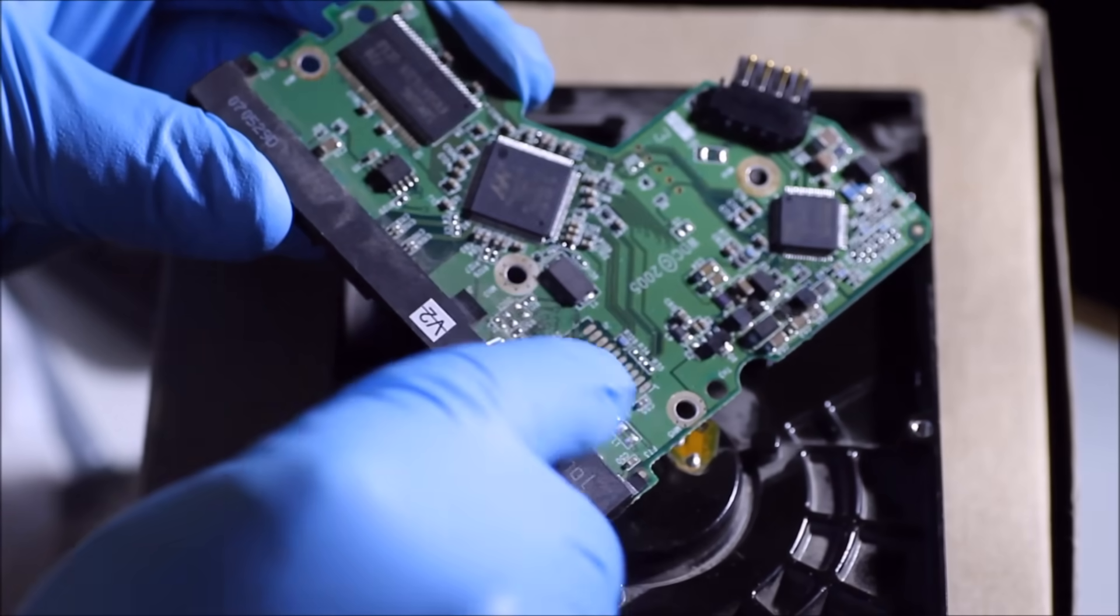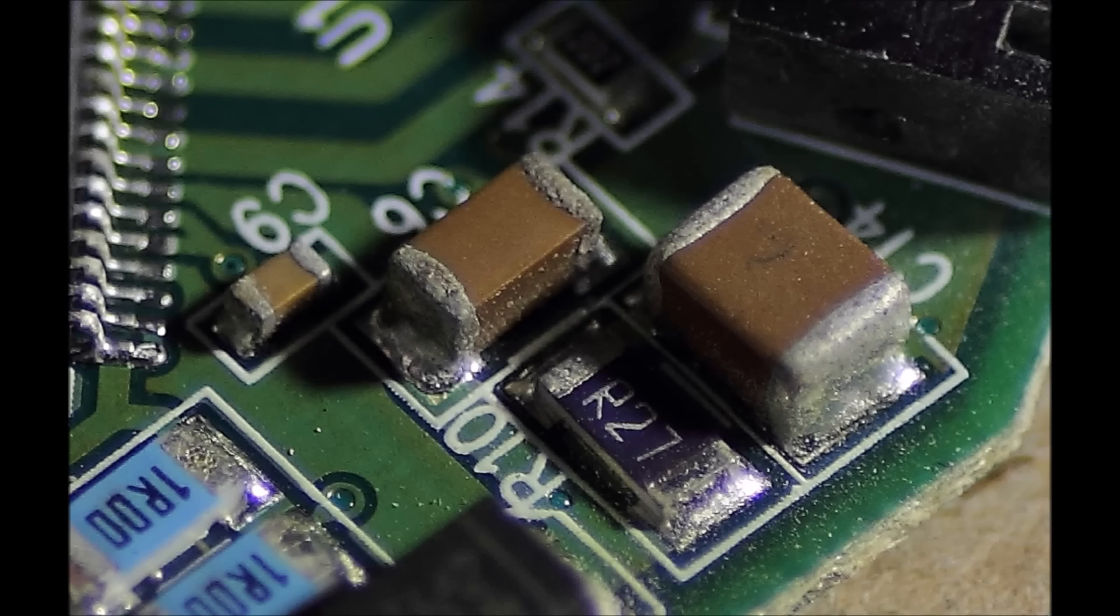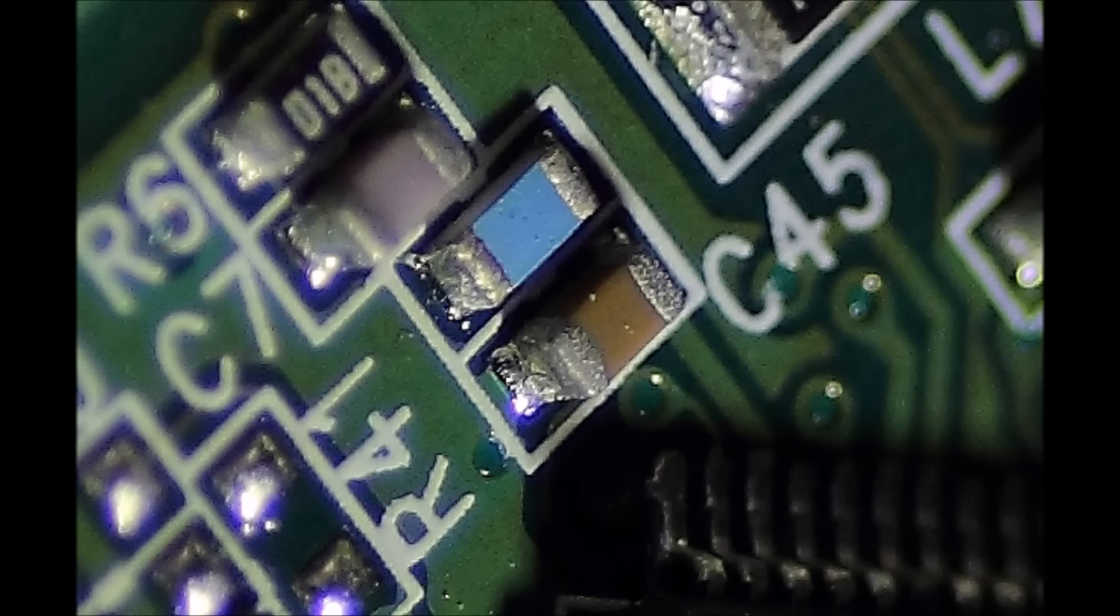The next valuable item located on the board is the monolithic ceramic capacitors. These rectangular-shaped components can vary in size and in color. They'll be marked on the board with a C and then a number, such as in this one, C45. They are extremely valuable due to the silver and palladium content. They can easily be removed from the board with heat and a spatula.